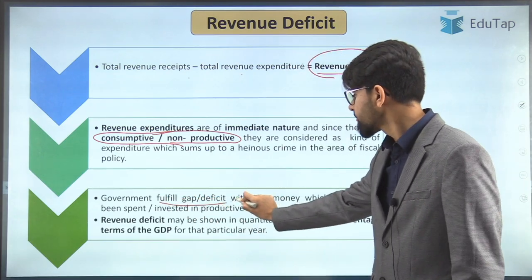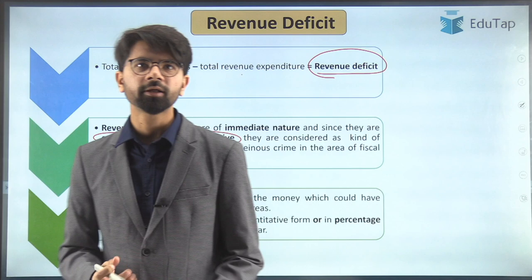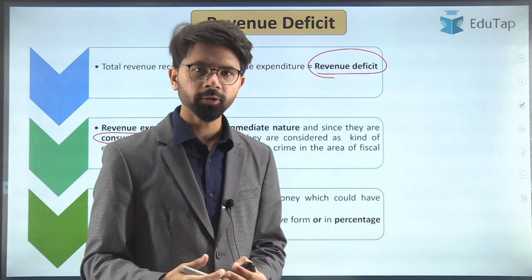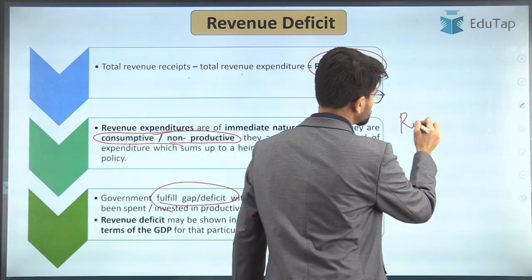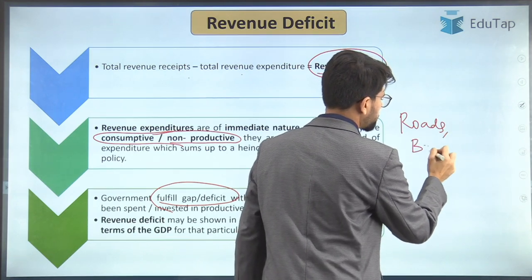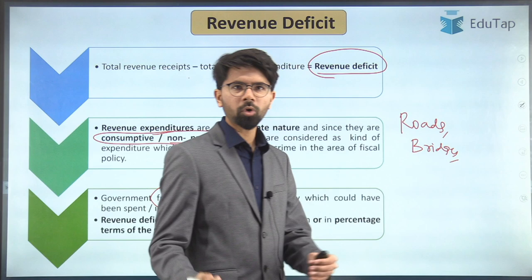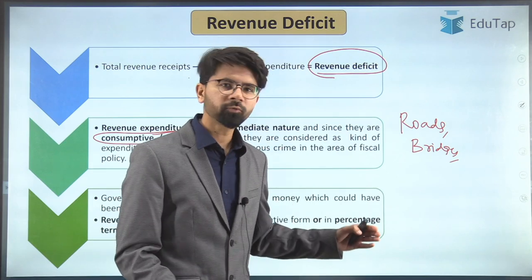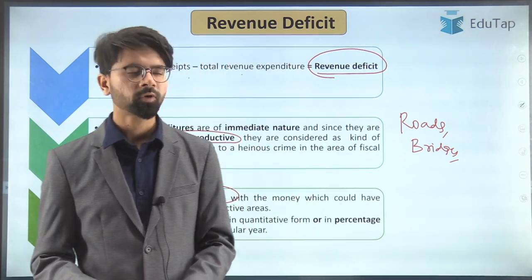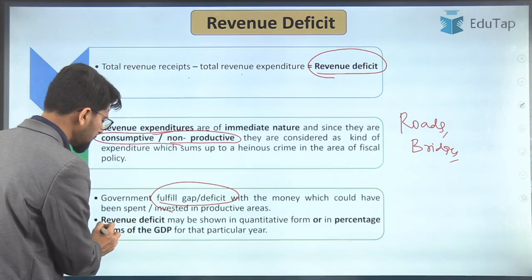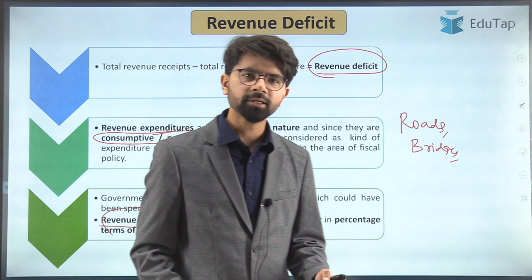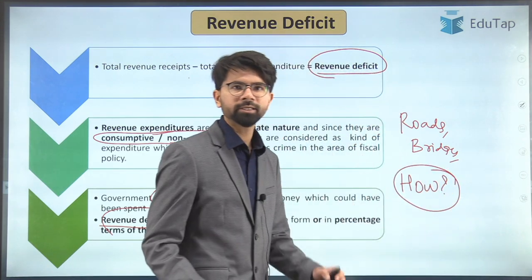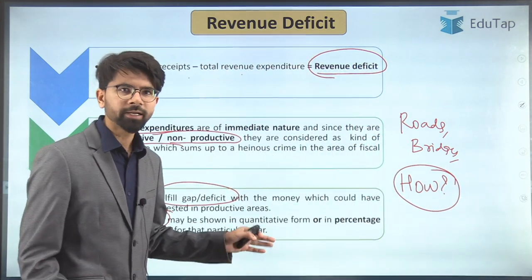If the government's earnings are not even enough to meet its revenue expenditure, that is a dangerous sign for the entire economy. Since revenue expenditures are of an immediate and consumptive nature, excess revenue deficit will add up to the fiscal deficit. How does the government try to fulfill this gap? It will resort to borrowing. Borrowing should ideally be invested in capital assets like roads, bridges, and dams, which accrue long-term benefits. But borrowing to meet daily expenses is not a healthy sign for the economy. Revenue deficit is expressed as a percentage of GDP.